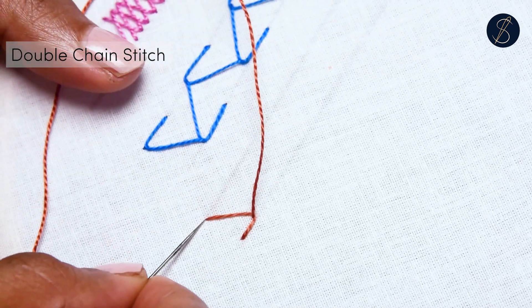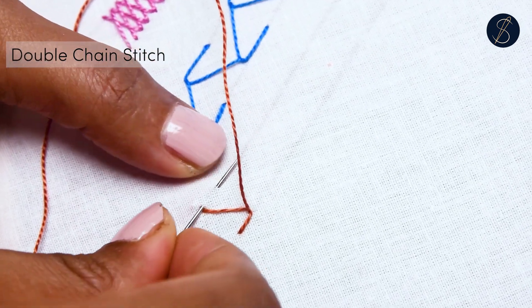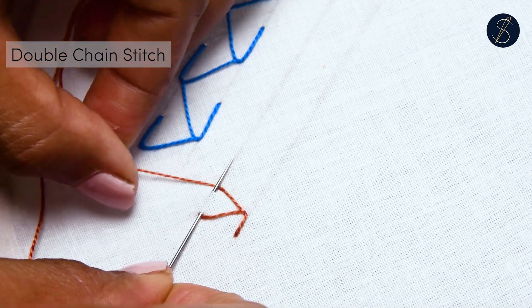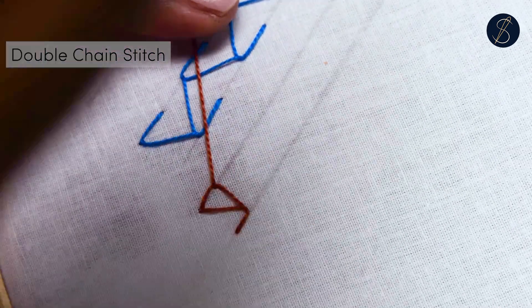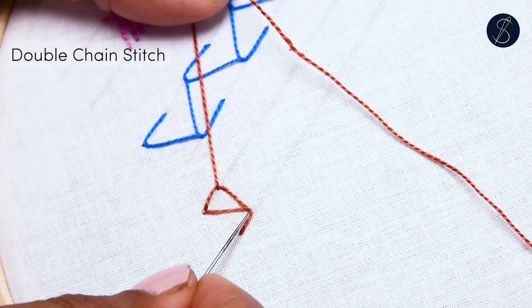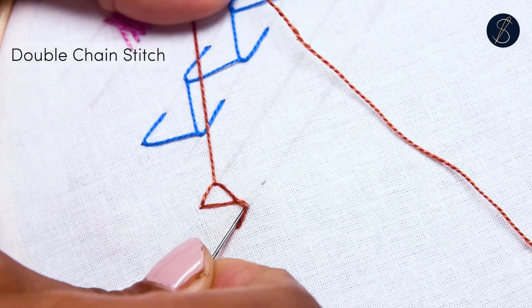Work the next stitch by plucking the fabric on the first stitch line closer to the very first stitch point. When making the third loop, take the needle inside the loop to plug the fabric.